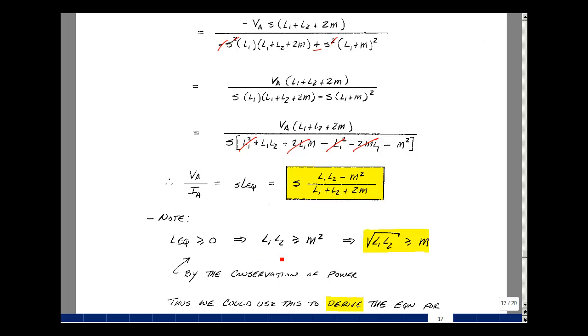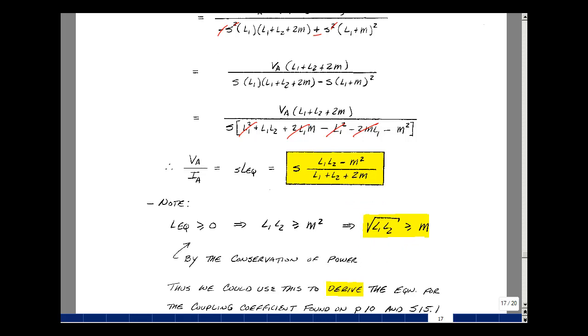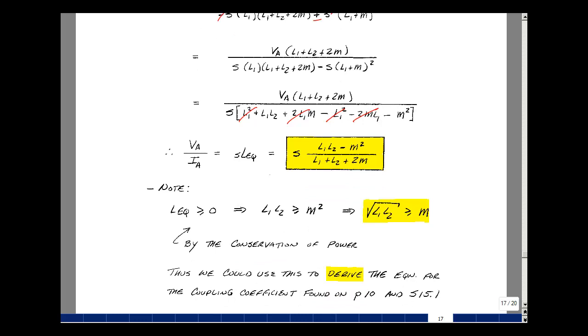And so that implies that this numerator has to be greater than or equal to zero. That implies that L1 L2 is greater than M squared, the square root of both sides of the equation, that the square root of L1 L2 is greater than or equal to M. And this ratio is how we defined our coupling coefficient. So we could have used this example to derive that constraint, or we can use the energy argument in supplemental problem 15.1 or the derivation we did back on page 10. This is a model for an S-domain transformer and some applications.